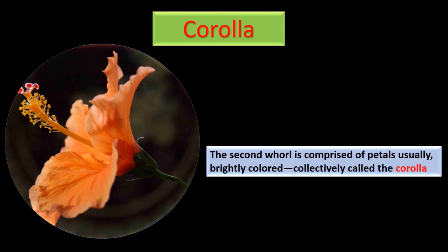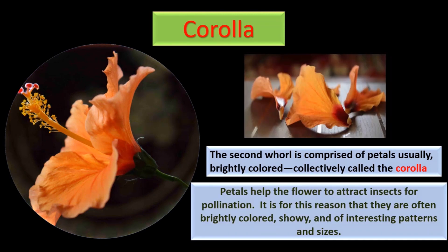Let us look at the second part, i.e., corolla. The second wall is comprised of petals, usually brightly colored, collectively called the corolla. Petals help the flower to attract insects for pollination. It is for this reason that they are often brightly colored, showy, and of interesting patterns and sizes.